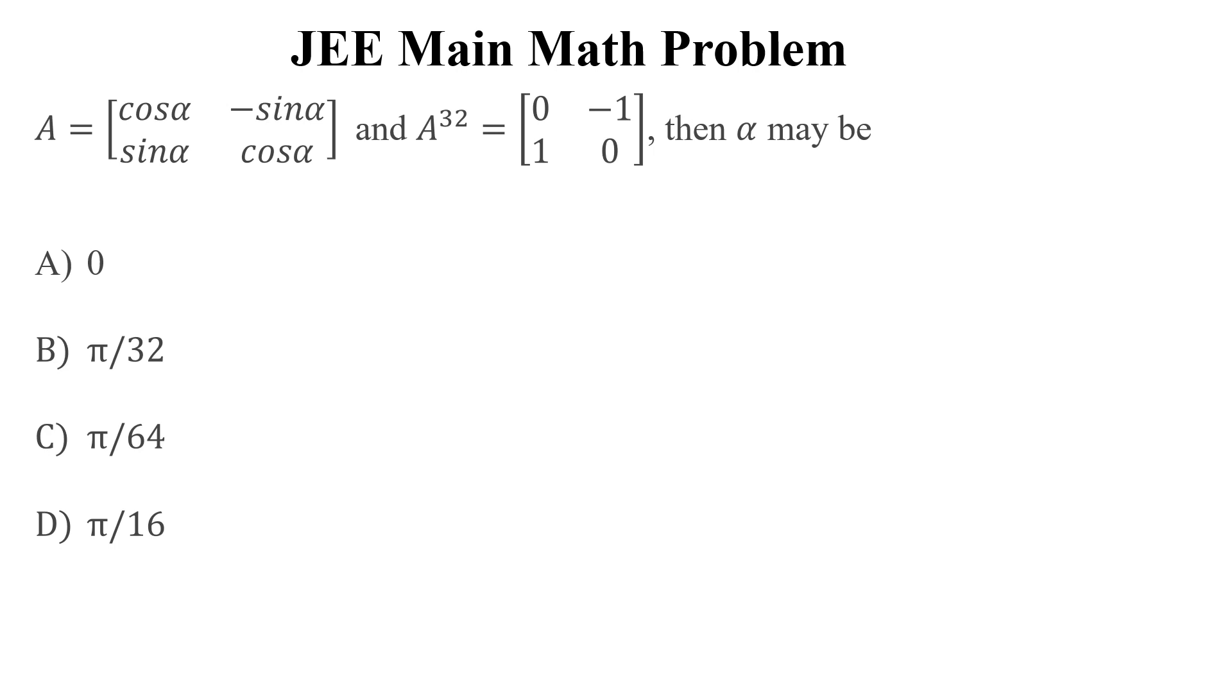Let's begin to solve the question. The question is, if this is matrix A and this is matrix A to the power 32, then what is alpha? What is the correct option? How can we solve this?